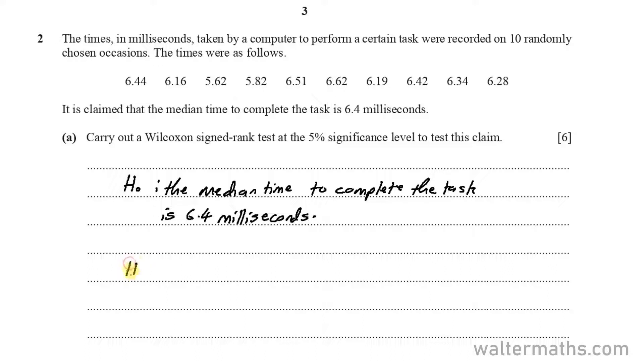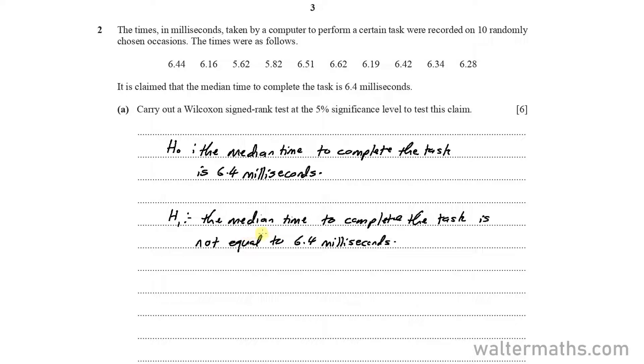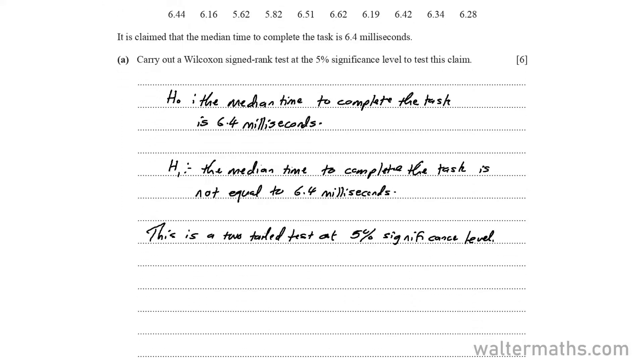So for the alternative hypothesis here, we are saying that the median time to complete the task is not equal to 6.4 milliseconds. So these are the two hypotheses. I think you can notice from the alternative hypothesis that this is a two-tailed test at 5% significance level. So that's the test we want to carry out.